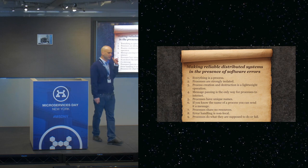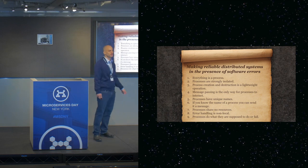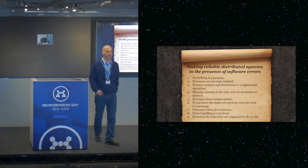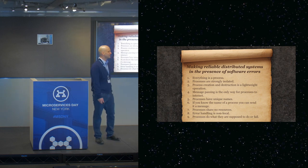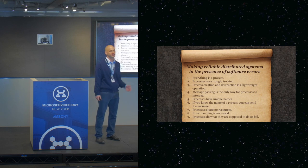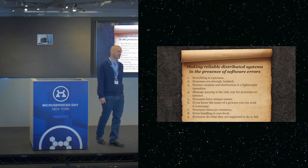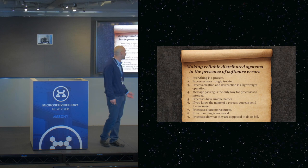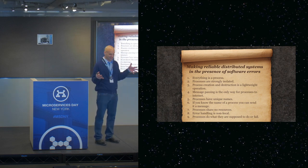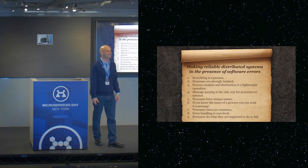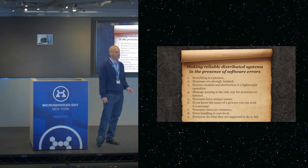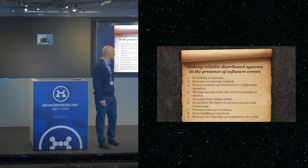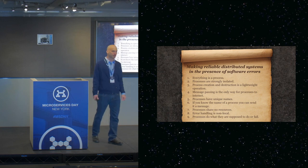I stumbled across this paper by Joe Armstrong, the co-creator of the language. He wrote a PhD thesis called Making Reliable Distributed Systems in the Presence of Software Errors, and it is completely applicable to microservices today. When I came across it, it was like finding the Lost Dead Sea Scrolls of microservices. It's really approachable and easy to read — I do encourage reading it. He outlines the nine items of the Erlang worldview.